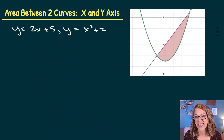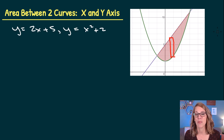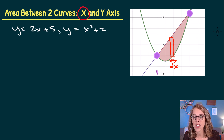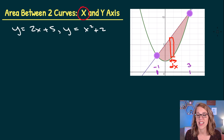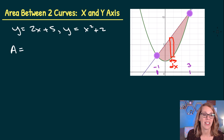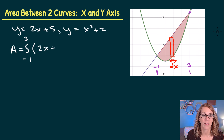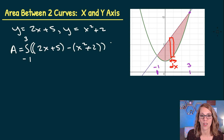The last thing I need is the variable of integration. Looking at a representative rectangle, its width is in the x direction, so I want everything in x's. The x-coordinates of my intersection points are −1 and 3 — my limits of integration. So the area equals the integral from −1 to 3 of the upper function, 2x plus 5, minus the lower function, x squared plus 2, in parentheses, dx.